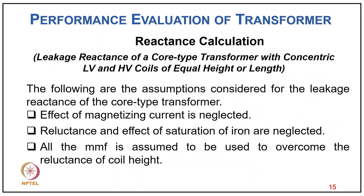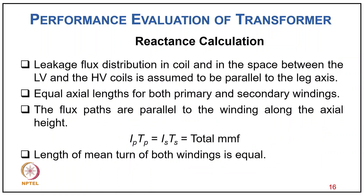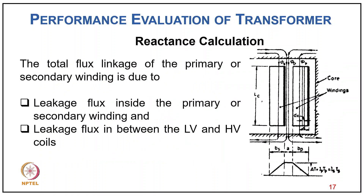The assumptions for leakage reactance calculation of a core-type transformer are: effect of magnetizing current is neglected; reluctance and effect of saturation of iron are neglected; all MMF is assumed to overcome the reluctance of the coil height. The leakage flux distribution in the coil and in the space between LV and HV coils is assumed to be parallel to the leg axis, with equal axial length for primary and secondary windings. Also, IpTp = IsTs = total MMF, and mean turn lengths of both windings are considered equal.